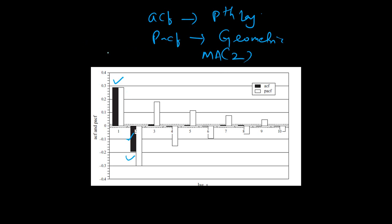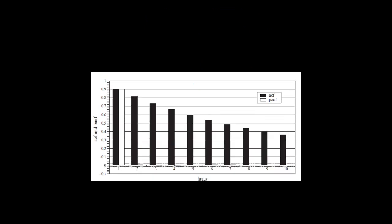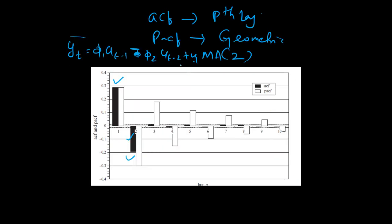An MA(2) process can be represented like this: the first term is positive because it is in the positive y-axis, so you have psi1 times u(t-1), plus — this is minus — minus psi2 times u(t-2), plus ut. That is the form of the MA process and that is how you identify whether it is an MA process or not.